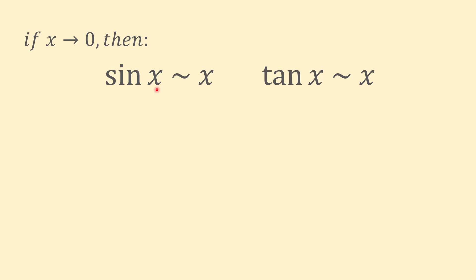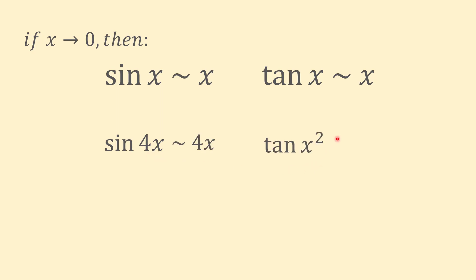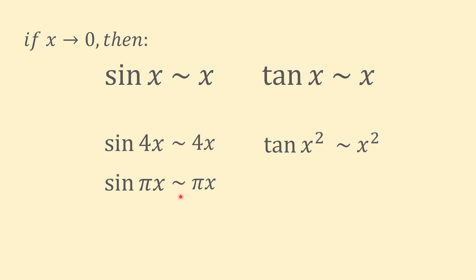Note that we can make these replacements for any expression if that expression approaches 0. Sine of any expression or tangent of any expression can be replaced with the expression itself when evaluating limits, if that expression approaches 0. For example, we can replace sine of 4x with 4x, tangent of x squared with x squared, sine of pi x with pi x, and tangent of cube root of x with cube root of x. With these replacements we easily simplify our limit and find its value.